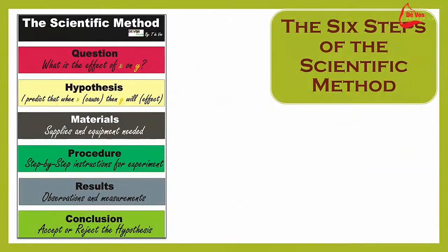I use the six steps of the scientific method. Firstly, I would question and design a question that I can investigate. Next, I should have some form of a prediction of what I expect the results should look like. I need to make sure that I have the materials that I need. I have to have a procedure that I can follow step by step.